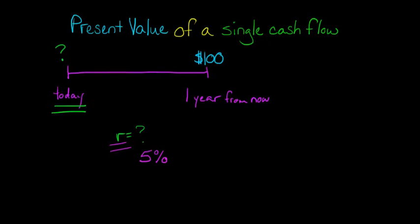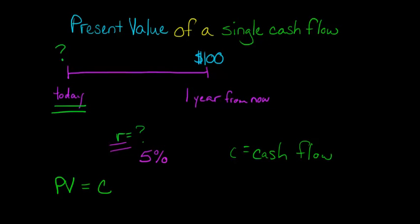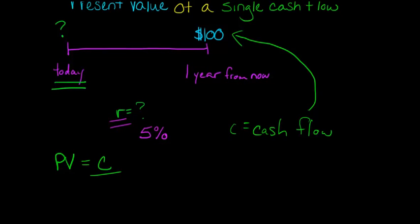Today, if we invested a certain amount at 5% interest, it would end up being $100 at the end of the year. There's a convenient formula that allows us to calculate that. The present value is equal to the cash flow — which I'll call C — divided by 1 plus R.